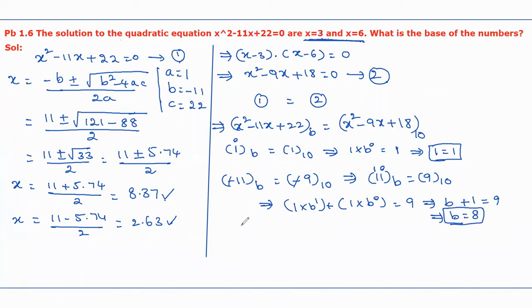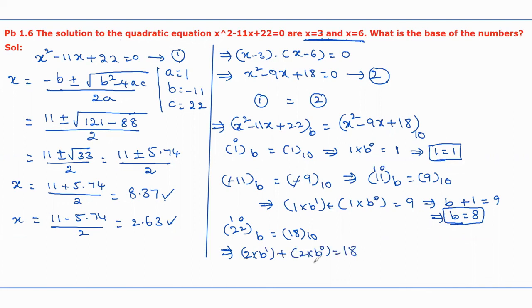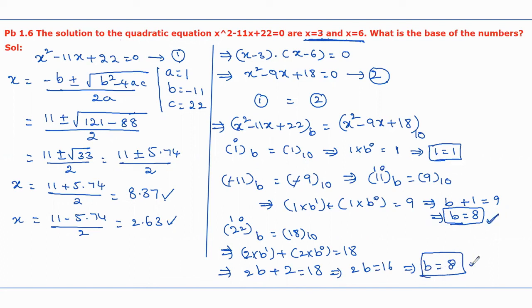Now comparing the constant terms: 22 in base b equals 18 in base 10. Converting: 2 times b to the power 1 plus 2 times b to the power 0 equals 18, giving 2b plus 2 equals 18, so 2b equals 16, and b equals 8. This confirms the base of the given numbers. Therefore, the base of the given numbers is b equal to 8. Thank you.